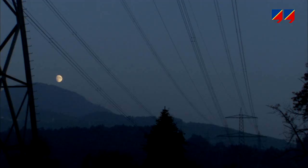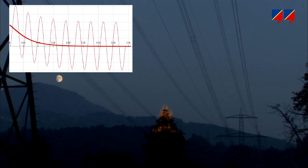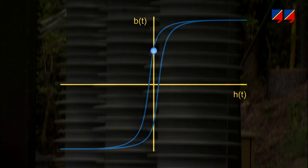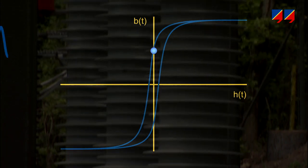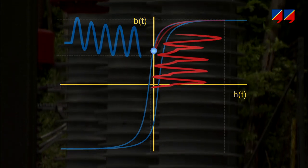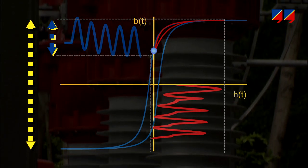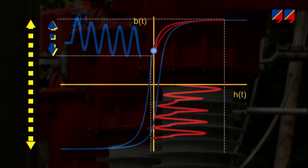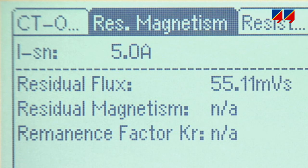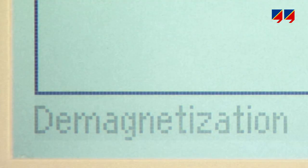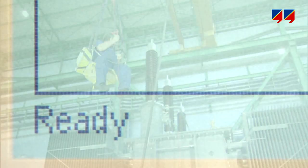After short-circuit faults involving high DC components, a CT may have magnetic remnants, particularly in enclosed iron cores. During the next fault, these remnants can cause the CT to saturate at much lower short-circuit currents than calculated. CT Analyzer's Remalyzer function can determine a CT core's magnetic remnants, helping to analyze unexpected relay behavior, and subsequently to remove it by demagnetizing the core.